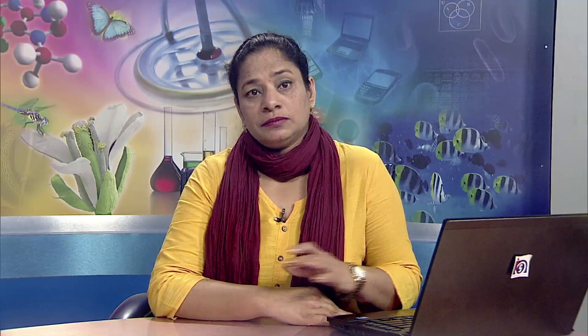Land is a solid substratum which supports humans and many other organisms. Soil erosion is the loosening and displacement of topsoil particles from the land. It is a natural process that occurs on all lands and may occur at a slow or fast rate. Land degradation is the deterioration in the quality of land. Degradation of land results in loss of crop production capacity of the land.